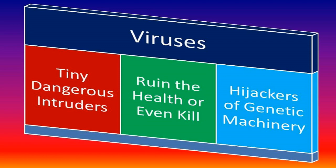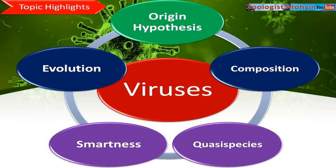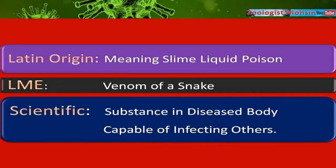Today we shall learn about the word virus, which has Latin origin and literally means slime, liquid, poison. In late Middle English, this word was used for the venom of a snake, and in scientific understanding, virus is a substance produced in the body as the result of a disease which is capable of infecting others.